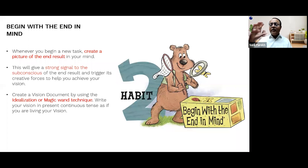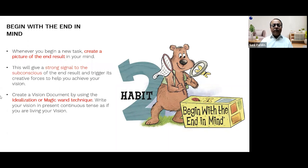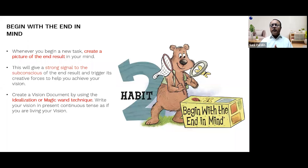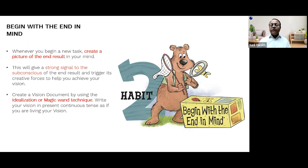I want my health to be like this, I want my relationships to be like this, I want my business and job to be like this. When you write your vision document, it must be in the present continuous tense — as if you're already living your vision. Completely fit and fine, my body is like this, I'm full of energy, I'm eating good food. It is almost like you're writing an essay describing your life on the 17th of March 2024.